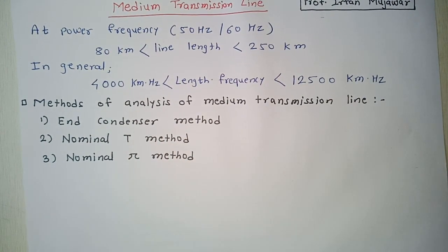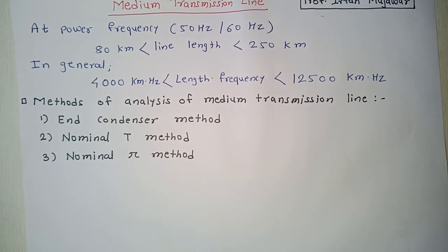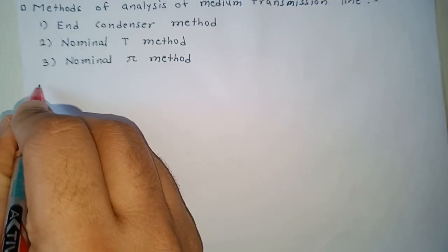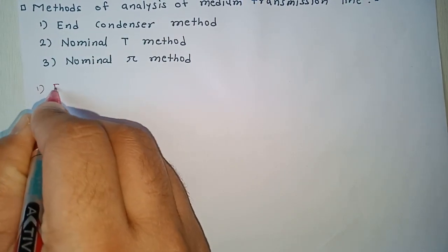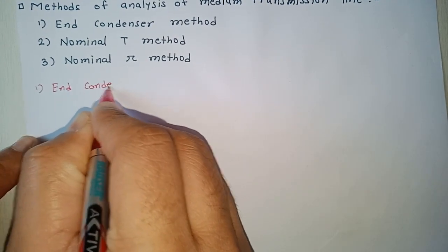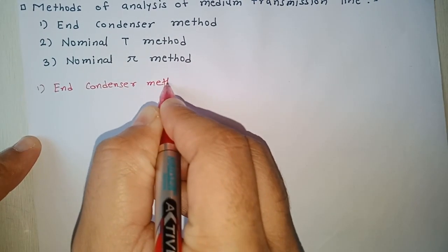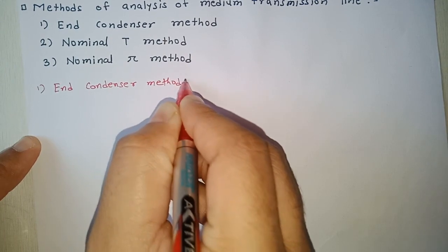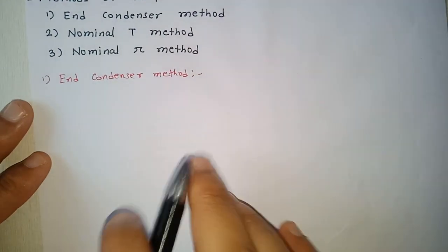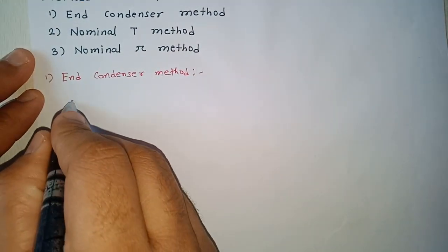Today we will see the first method — the end condenser method. We will draw the circuit diagram of the medium transmission line using this method.